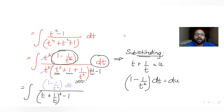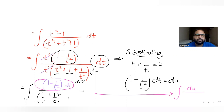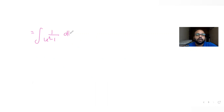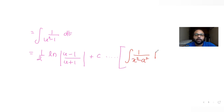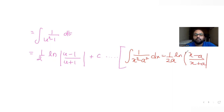So using the substitution, the integral becomes 1 upon (u squared minus 1) du. That gives us half log of mod of (u minus 1) upon (u plus 1) plus C. This uses the standard formula: integral of 1 upon (x squared minus a squared) dx equals 1 by 2a log to the base e of mod of (x minus a) upon (x plus a) plus C.